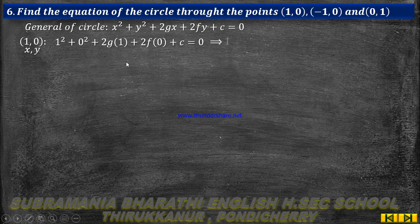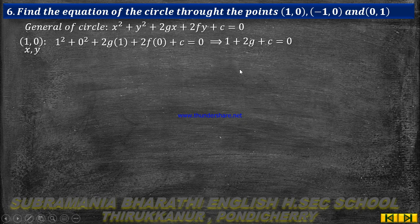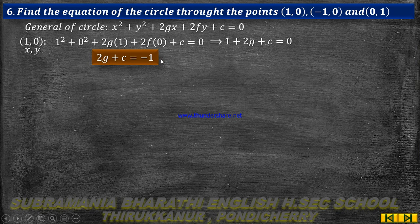Since 0 squared is 0 and f into 0 is 0, we get: 1 plus 2g plus c equal to 0, which simplifies to 2g plus c equal to minus 1. This is equation number 1.